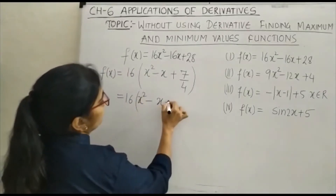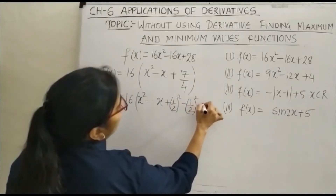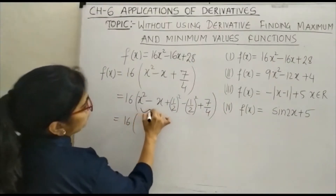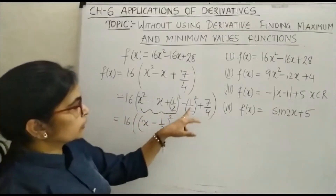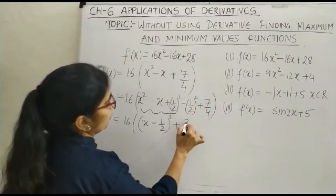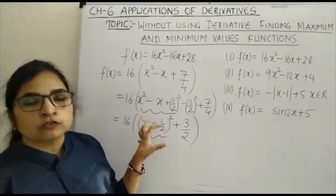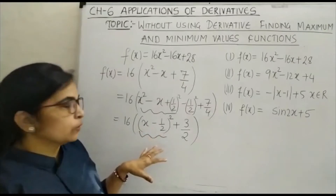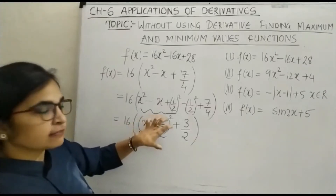Since we have minus, we add (1/2)² and subtract (1/2)², plus 7/4. Taking the first three terms, we get (x - 1/2)² and then 7/4 - 1/4, which gives 3/2. So we have 16 × [(x - 1/2)² + 3/2]. Now this quantity (x - 1/2)² is a square — a square cannot be less than zero; it can be zero but not negative.